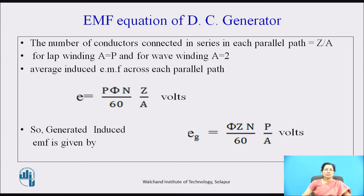So the generated induced EMF is given by E_g equal to phi·Z·N by 60 into P by A, in volts, where phi is the flux per pole, N is the speed, and Z, 60, P, A are all constant terms.